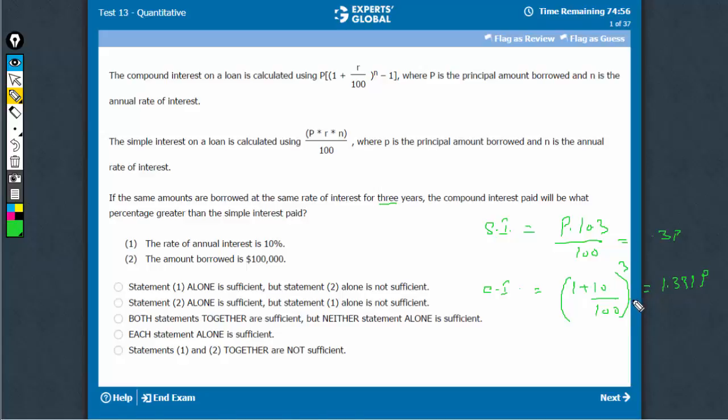This is the total amount, so minus P. So subtract P from it, the interest part would be 0.331.